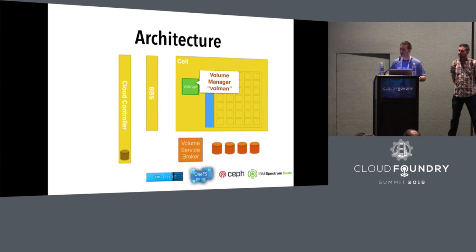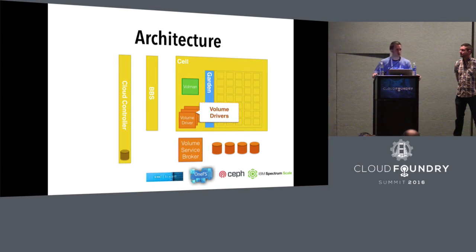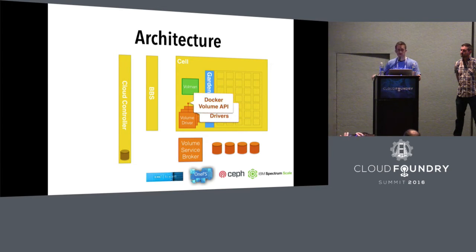We added a volume manager onto each cell — we call this thing volman. It doesn't actually talk directly to the storage systems. Instead, we add volume drivers co-located on the cell at the point you install Cloud Foundry. Those drivers expose the Docker volume API, and volman talks to them using Docker volume API calls. Those are the pieces we add.